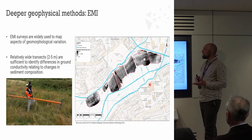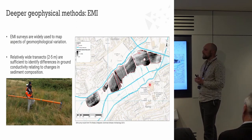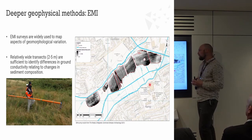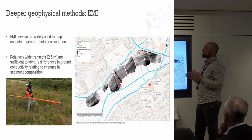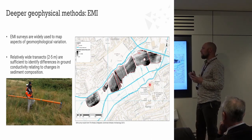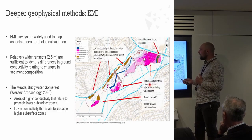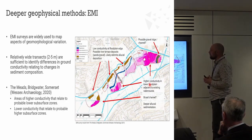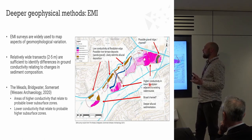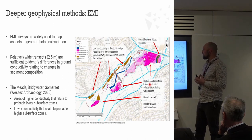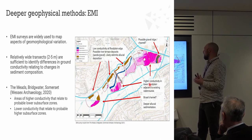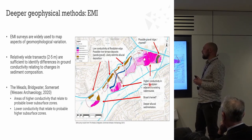Perhaps we can use other techniques more specifically focused on detailing geomorphological variation, such as electromagnetic induction. In this case we're not concerned about identifying specific features, but just these geomorphological landforms or changes in sediment composition. This is a project from the Meads undertaken by Wessex Archaeology, where we identified lower conductivity areas at the edge of the floodplain where possible river terrace deposits were located, and were also able to delineate former channels and lower-lying areas where we might expect more paleo-environmental material.